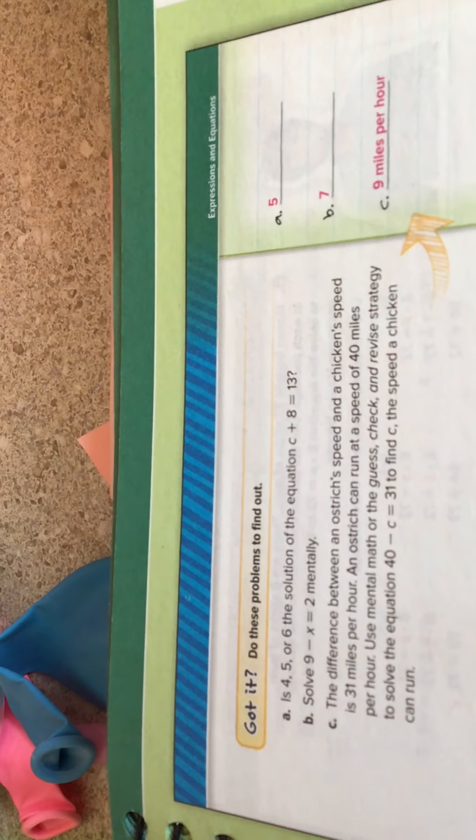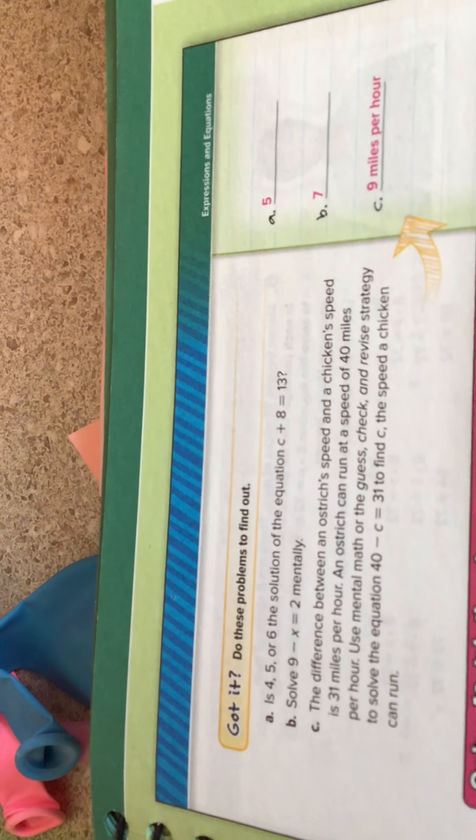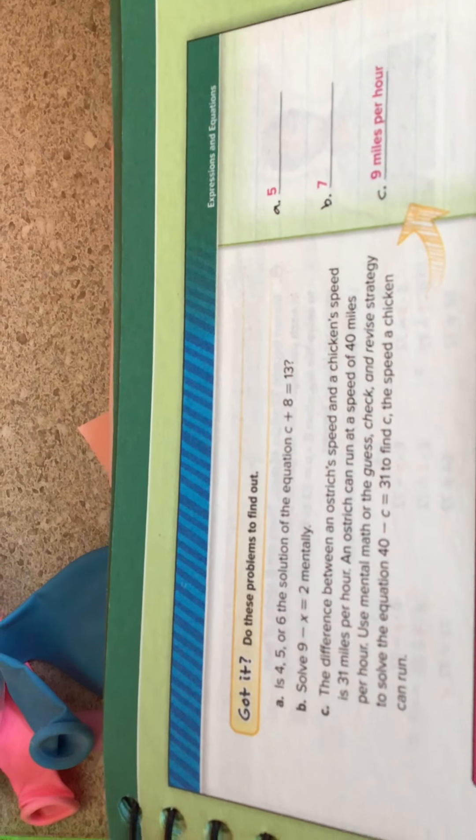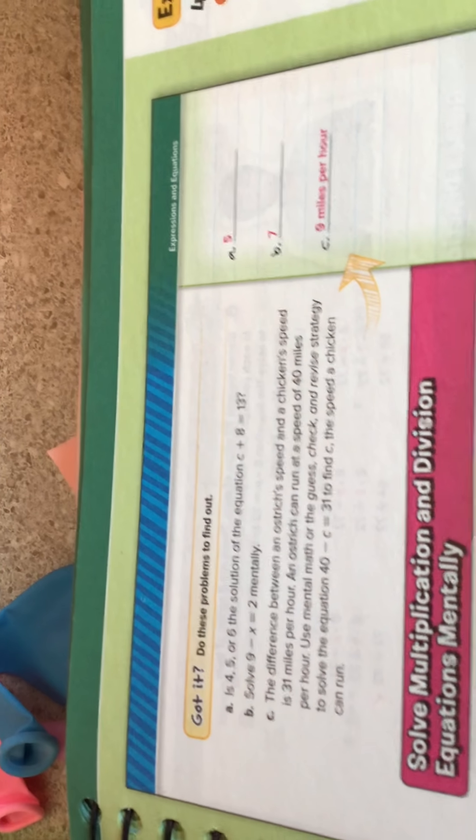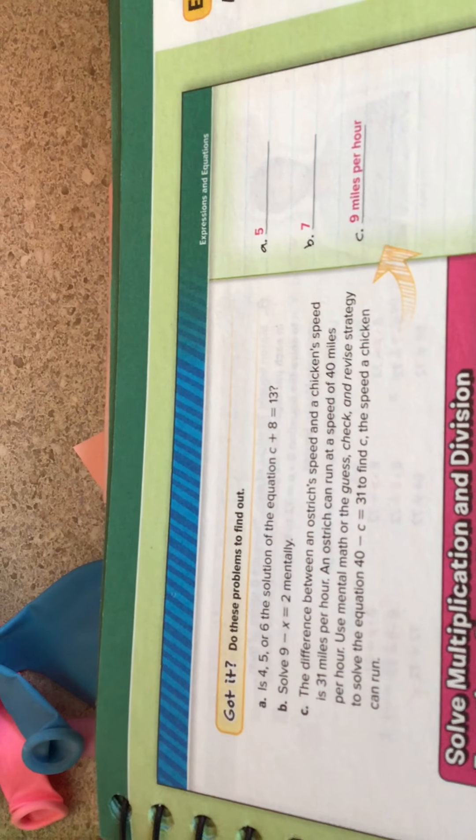Here are the answers. C is equal to 5 because 5 plus 8 equals 13. In B, X is equal to 7 because 9 minus 7 equals 2. And the difference between the speed of an ostrich and the speed of a chicken is 9 miles per hour.